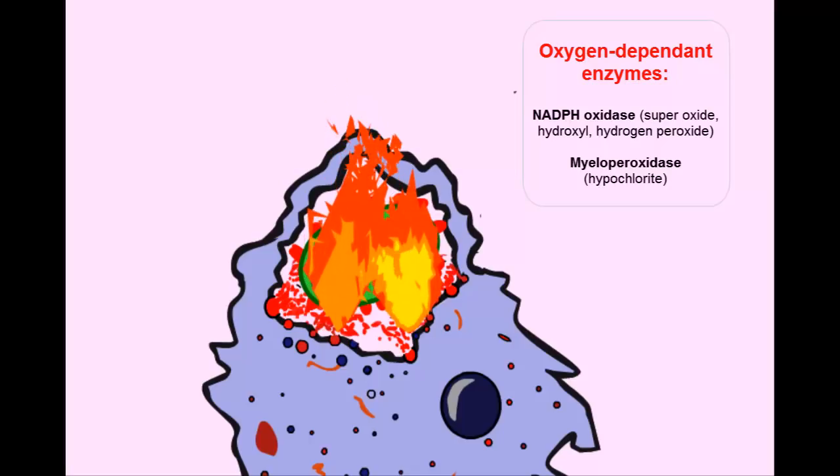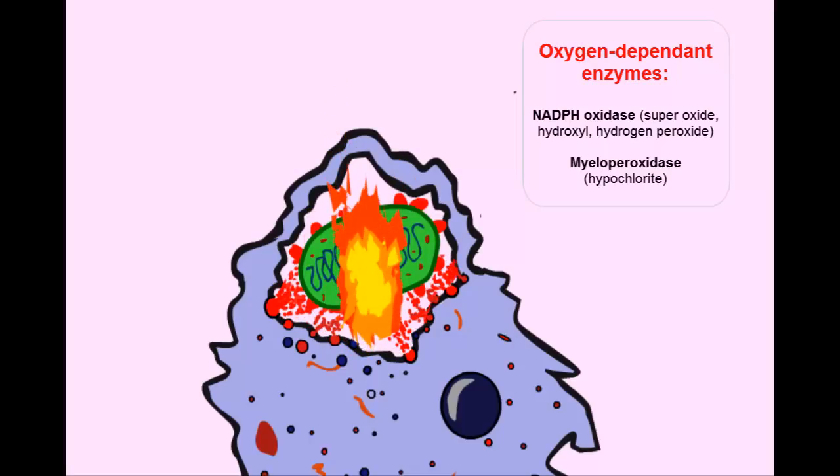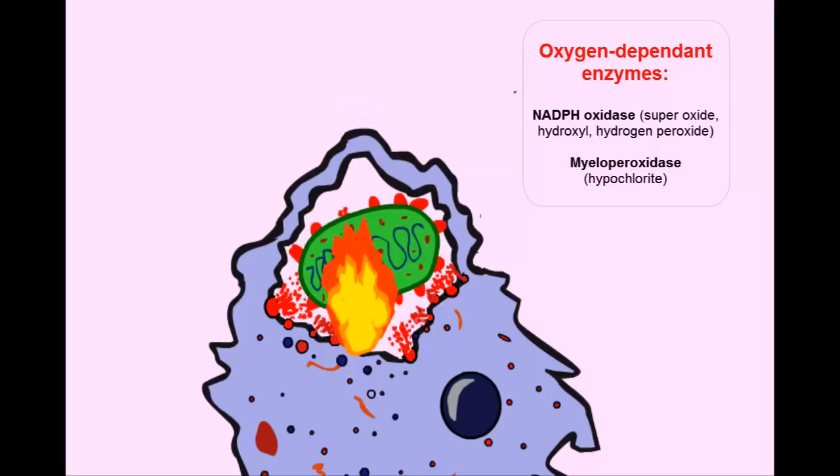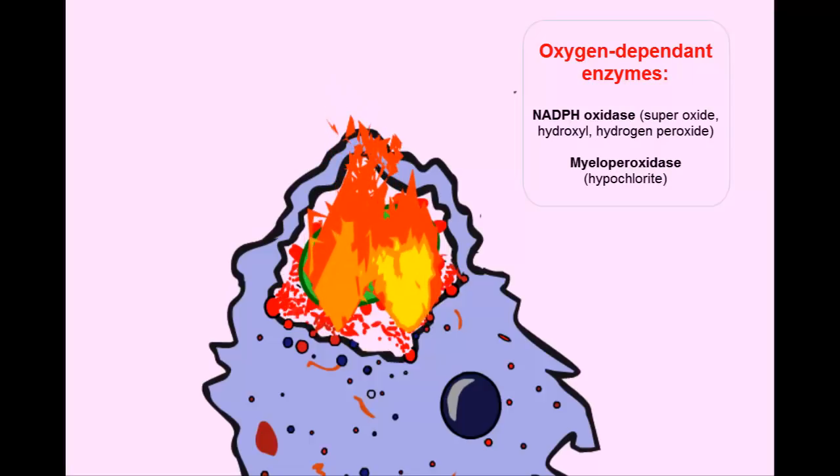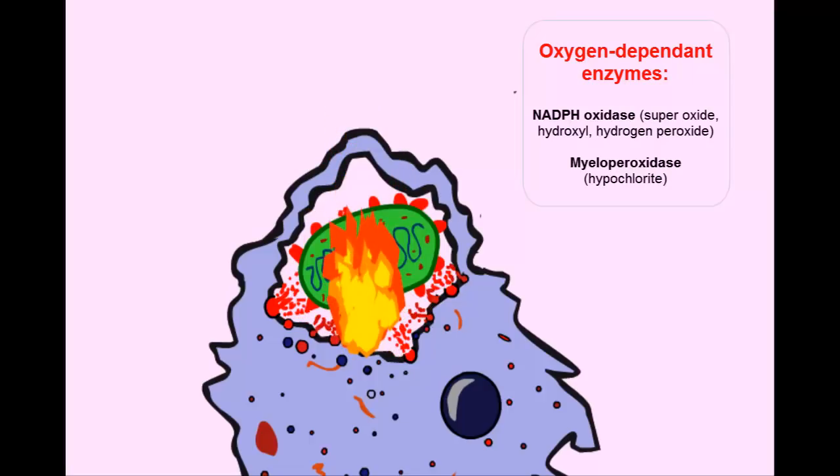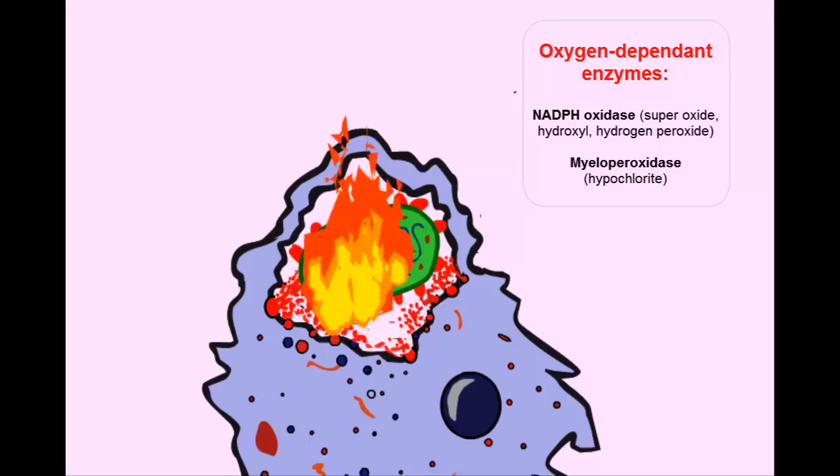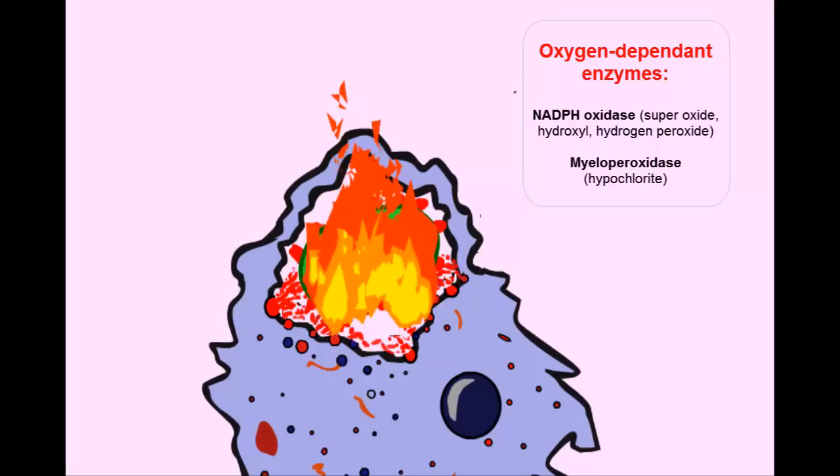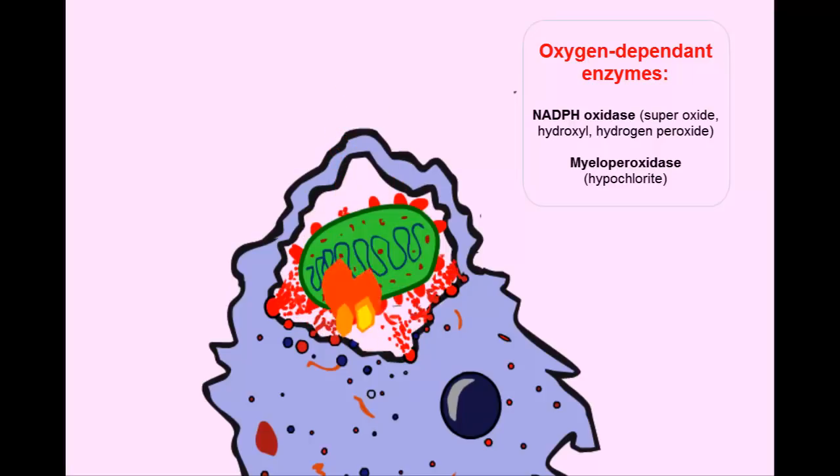The second oxygen dependent method is by another enzyme, myeloperoxidase, which combines chloride ions with some of the hydrogen peroxide formed by NADPH oxidase to produce hypochlorite, which interestingly enough is actually the same active ingredient that you'll find in a bottle of household bleach under your sink.